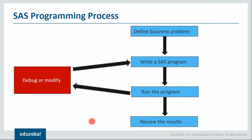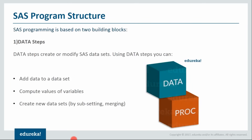Let us get started with the SAS programming process. What we do in SAS is we first define a problem statement, write a code, run it, and if there are any errors we debug or modify it and re-implement until we get our desired result. The programming structure of SAS is divided into two building blocks: data steps and proc steps. Data steps help you create datasets — you can add data, compute values of variables, and manage data by doing operations like subsetting or merging. Once you have the data, you need to process it using proc steps, also known as procedure steps.